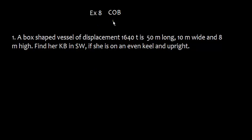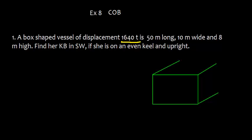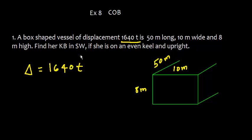This is Exercise 8 about center of buoyancy. Question number one: a box-shaped vessel of displacement 1640 tons is 50 meters long, 10 meters wide, and 8 meters high. Let's do the marking here — this is 50 meters, this is 10 meters, and this height is 8 meters. The displacement is 1640 tons. We need to find KB, the center of buoyancy from keel, in salt water if she is on an even keel and upright.